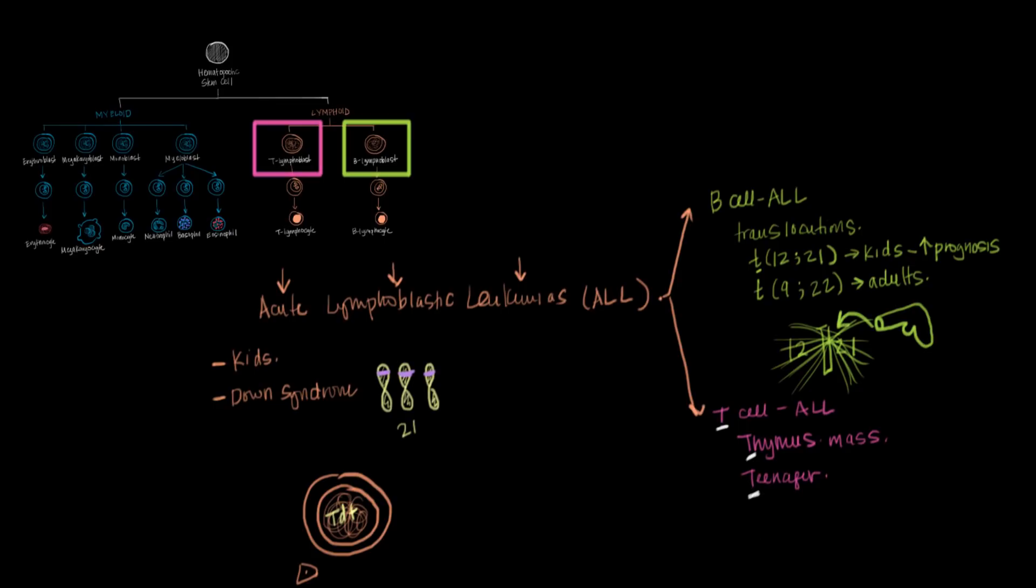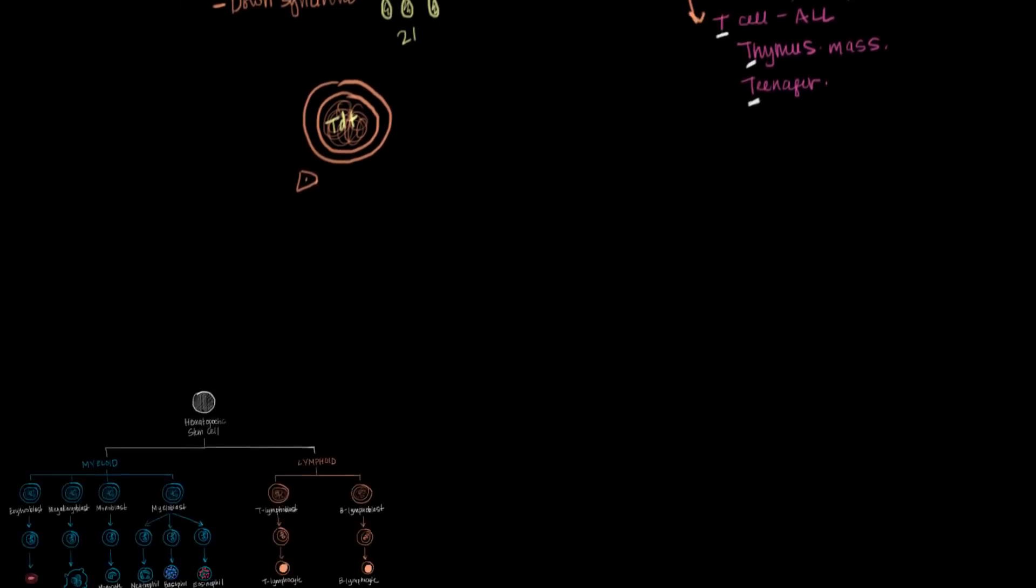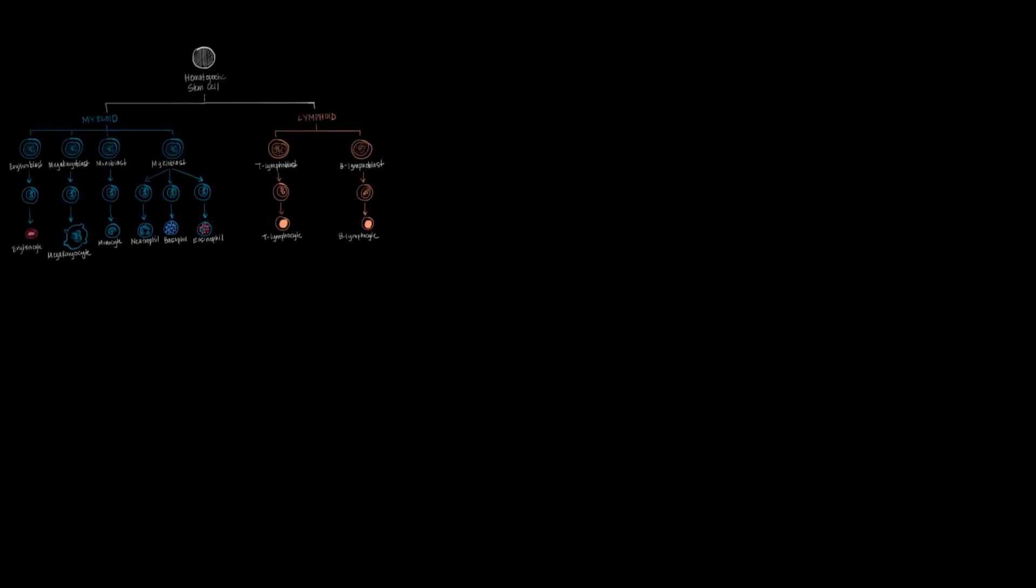So those are acute lymphoblastic leukemias. Now let's move on to our acute myeloid leukemias. So that means in this diagram we're looking at these guys over here. The acute myeloid leukemias.